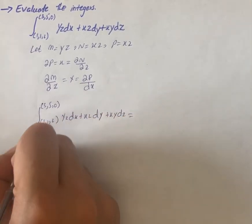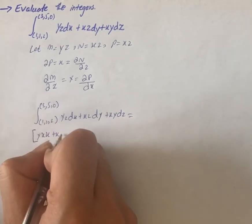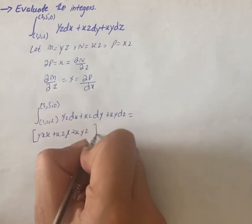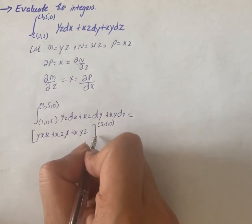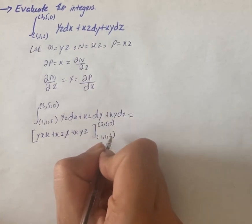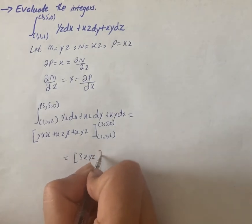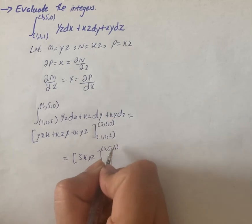is equal to yzx + xzy + xyz over three five zero and one one two. So we can write it as 3xyz raised to power three five zero and